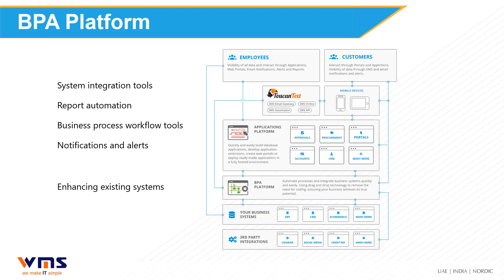We have a number of tools that can help you automate these processes, and WMS Software, who we have known for a long time and who are trained on our platform, can work with you on implementing this. We have integration tools, automated reports, workflow tools, notifications, and alerts. Our product called BPA Platform links databases and systems together with SAP Business One. We have an SMS engine for sending SMSs to clients, a rapid application platform for building customer portals and approval workflows, and a CRM system that integrates with SAP Business One.